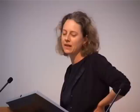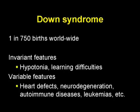Nothing very much happened for about 100 years until 1959, when Jérôme Lejeune, a French doctor working in Paris, found that Down syndrome arises principally because one has an extra copy of human chromosome 21. Most of us have 46 chromosomes; people with Down syndrome have an extra copy of chromosome 21. There are invariant features including hypotonia — the floppy baby — and learning difficulties, and then at least 80 different variable features including specific heart defects, Alzheimer's-like pathology, autoimmune diseases, leukemias, and many different systems affected. It's different in everybody who has Downs.